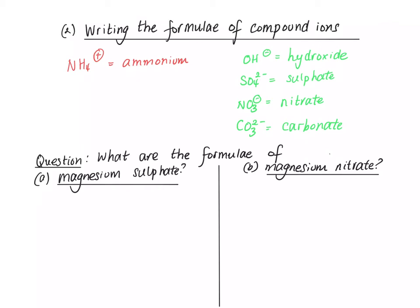So we'll write down the formula of the ion that magnesium makes, which is Mg2+, and sulfate, which we get from the table, is SO4 2-.